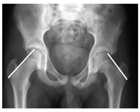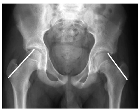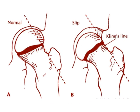The diagram on the left shows Klein's line drawn on an AP view of the pelvis. Notice that the left hip has SCFE — the line does not intersect the femoral head. The diagram on the right shows Klein's line drawn on an illustration of the hip. Once again, diagram B represents SCFE, as the line does not intersect the femoral head.